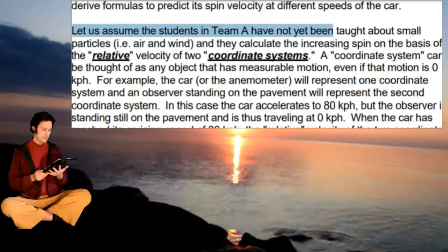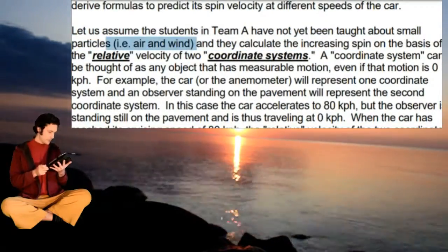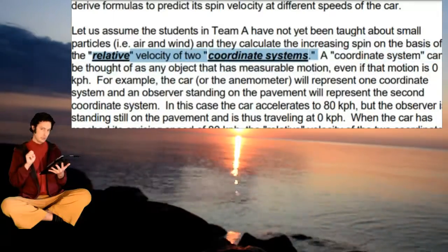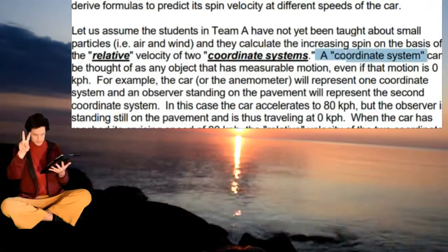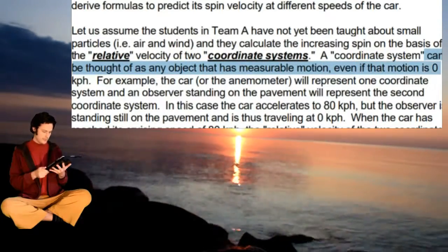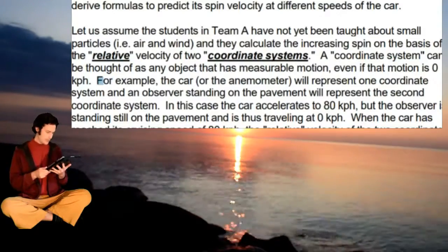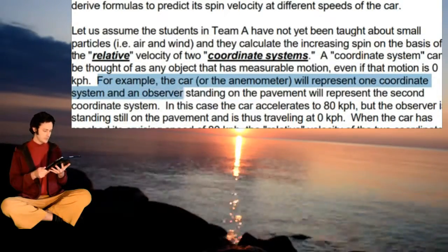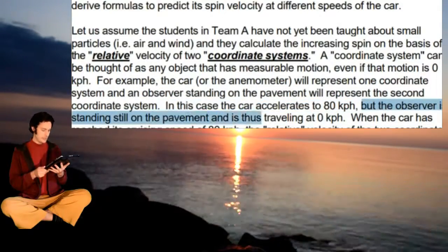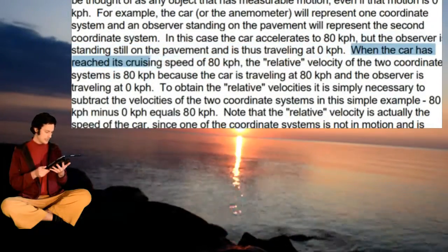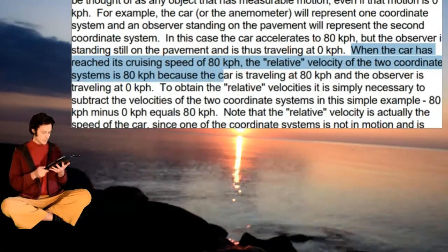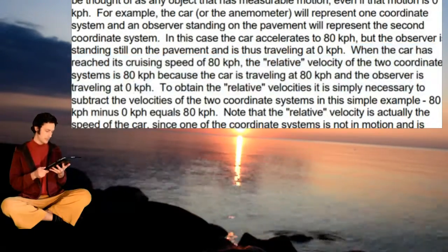Team A has not yet been taught about small particles — that is, air and wind — and they calculate the increasing speed on the basis of the relative velocity of the two coordinate systems. A coordinate system can be thought of as an object that has measurable motion, even if that motion is 0 kph. The car or anemometer represents one coordinate system, and an observer standing on the pavement represents the second. The car accelerates to 80 kph but the observer is standing still at 0 kph, thus the relative velocity of the two coordinate systems is 80 kph.